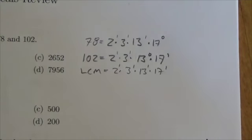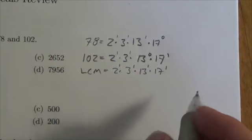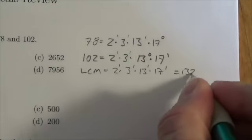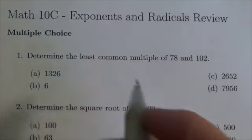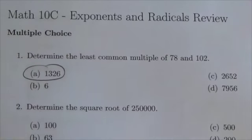So my least common multiple is simply going to be the product of all those factors, and when I do that, I get 1326, which means my least common multiple is A.